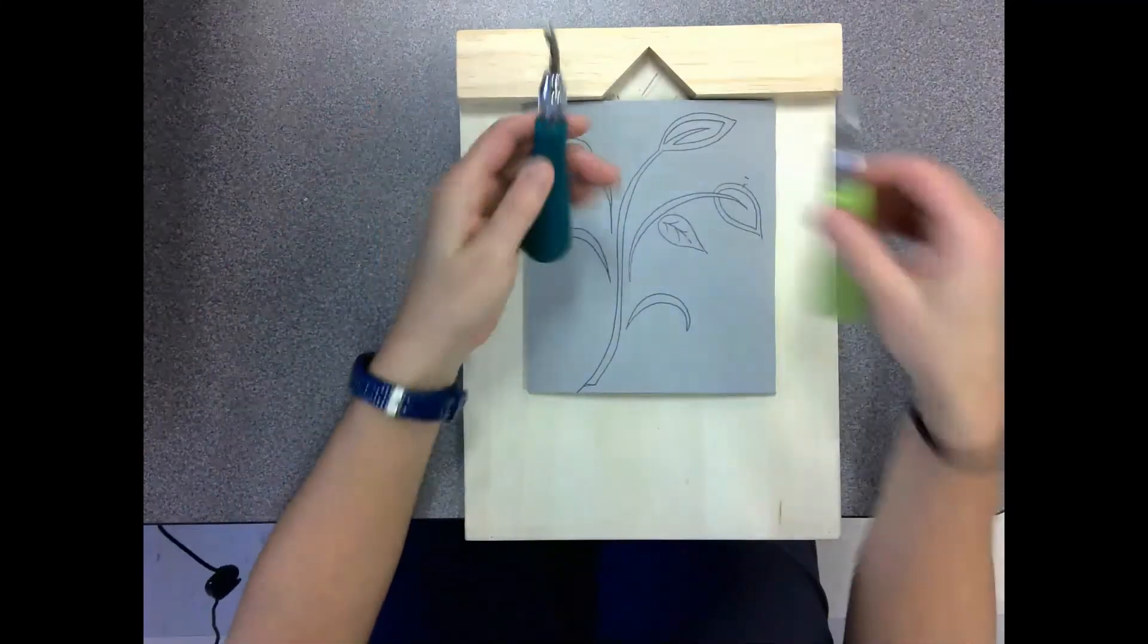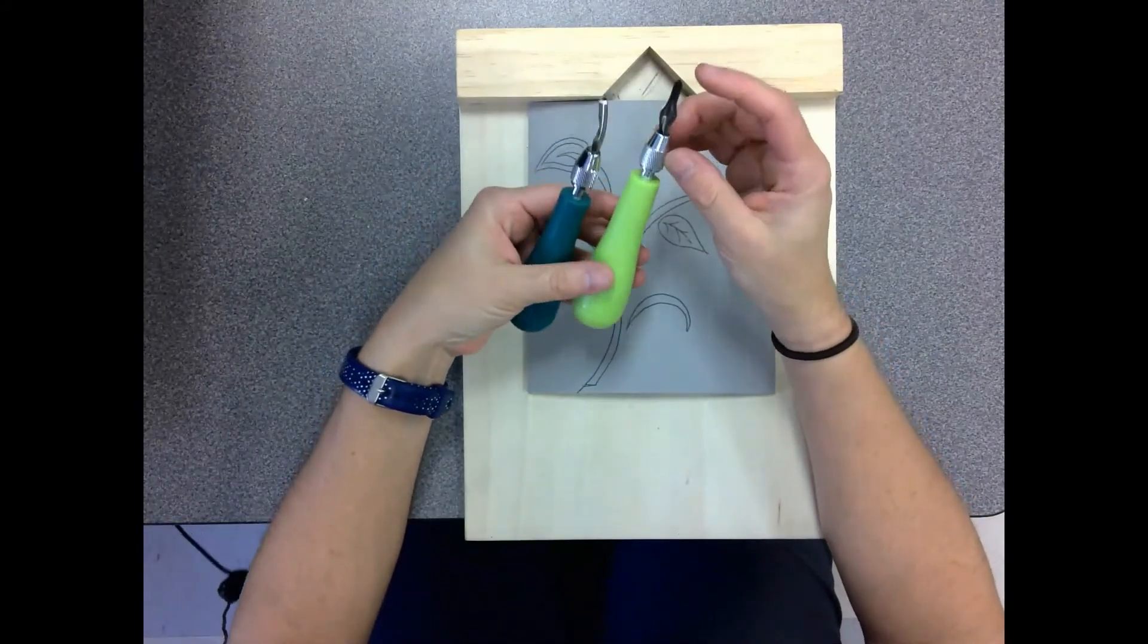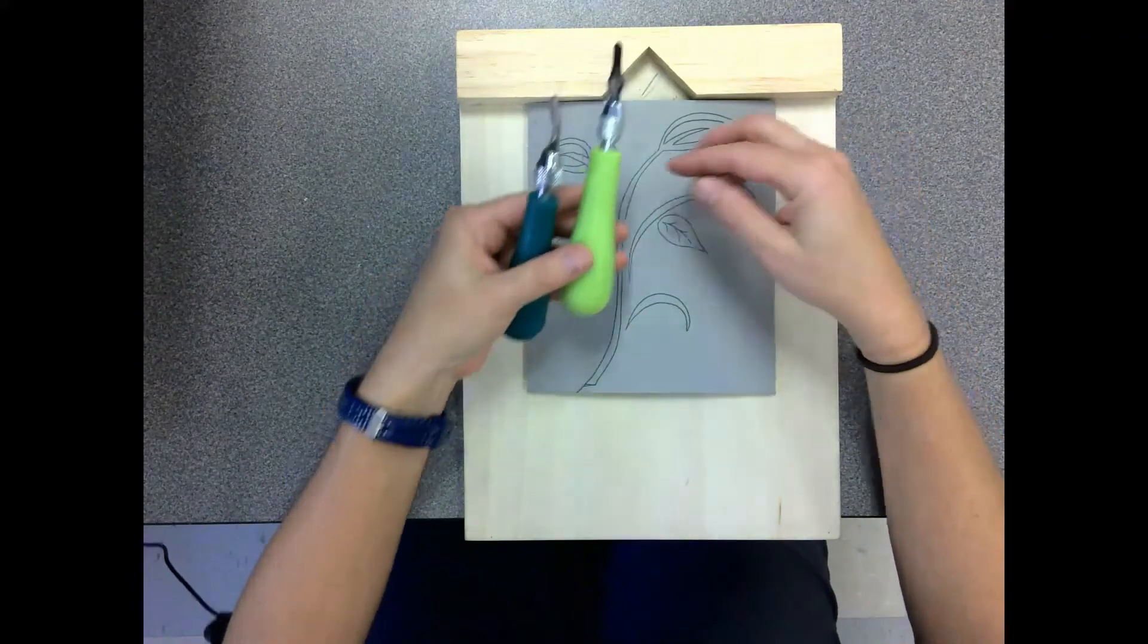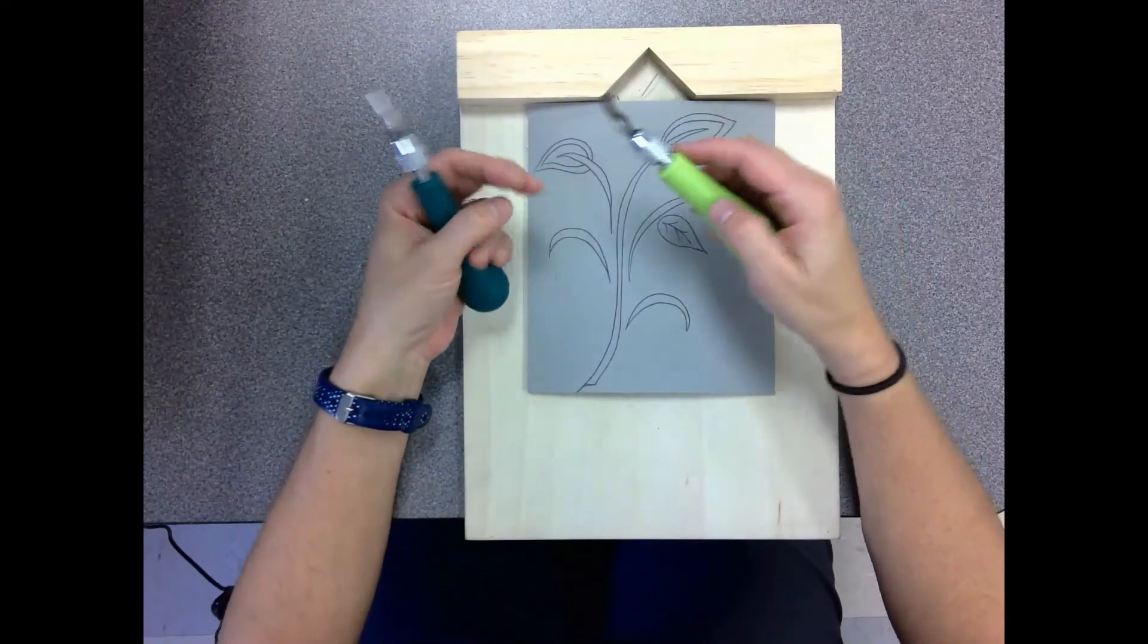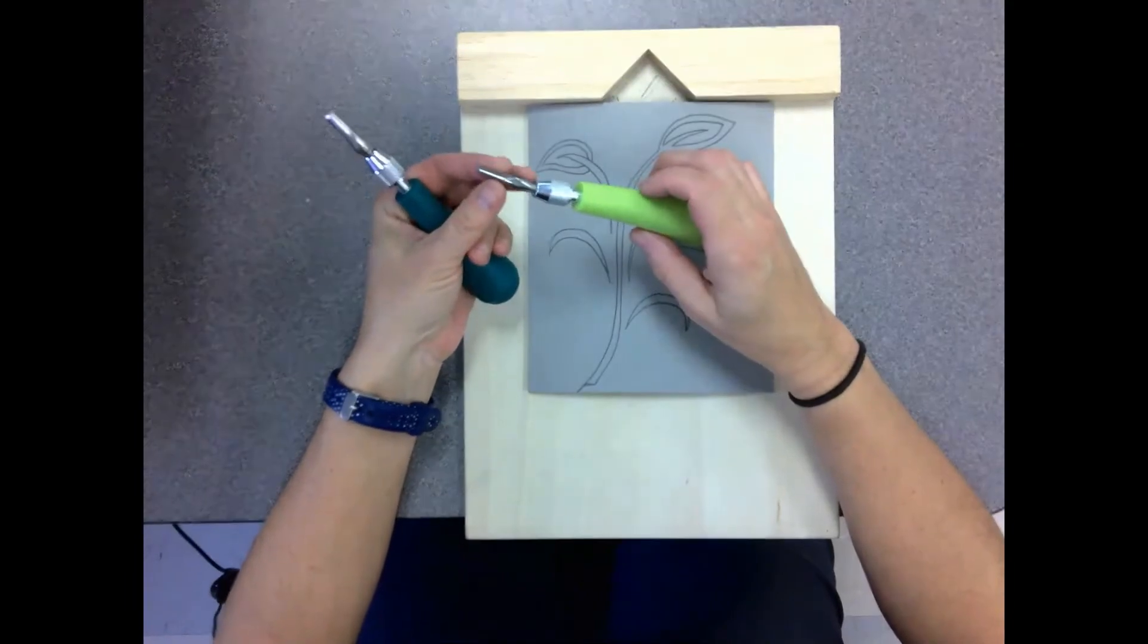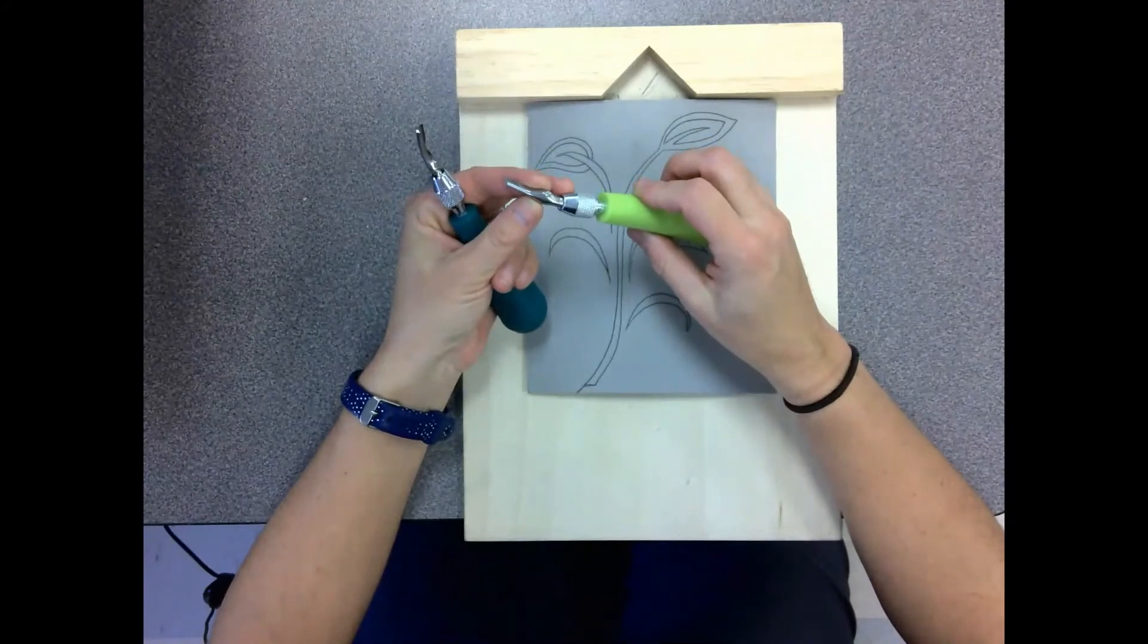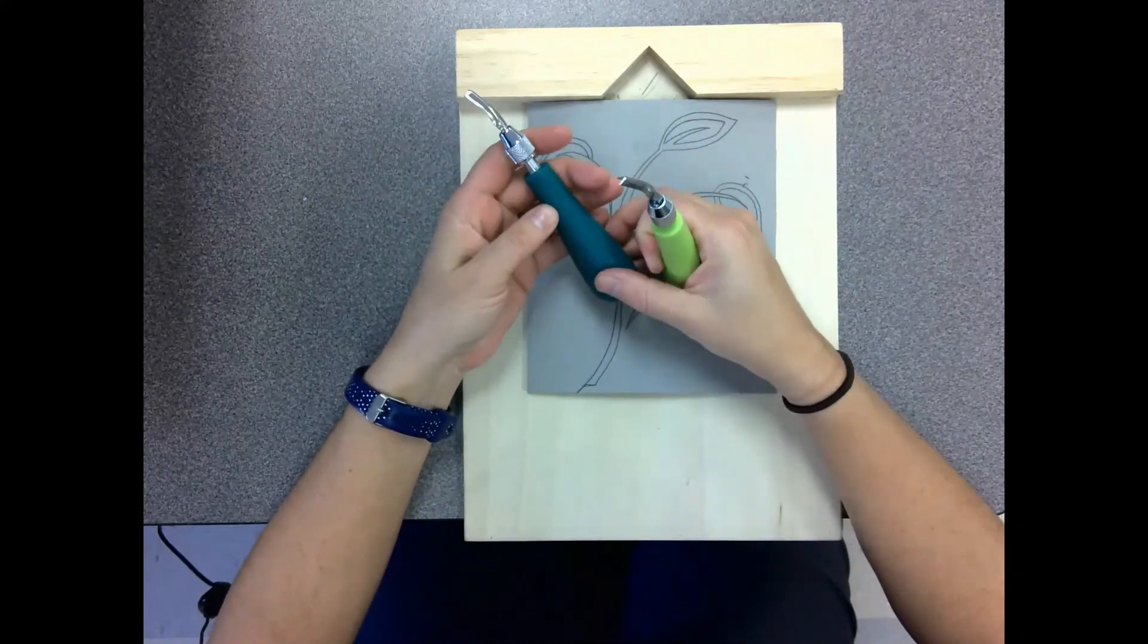So you have different linoleum cutters and these are very sharp because this is a very tough surface. If it slips and your hand's in the wrong spot it's going to cut your hand. I have two different sizes here. I usually use a two and a five. The two is smaller for outlining and more detailed areas and the five is for taking out big areas.